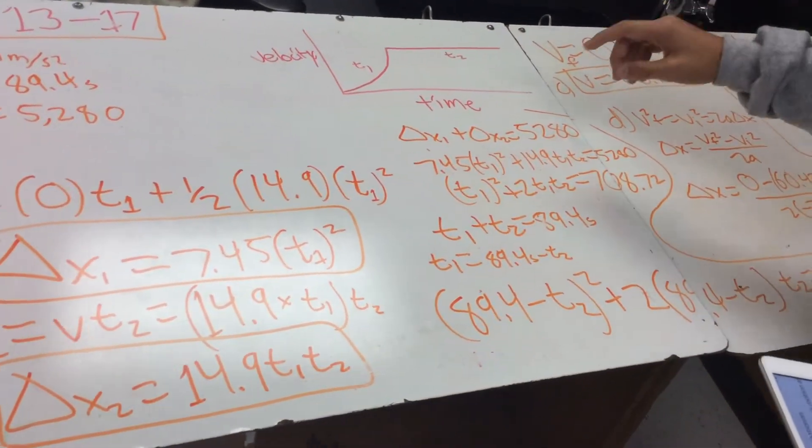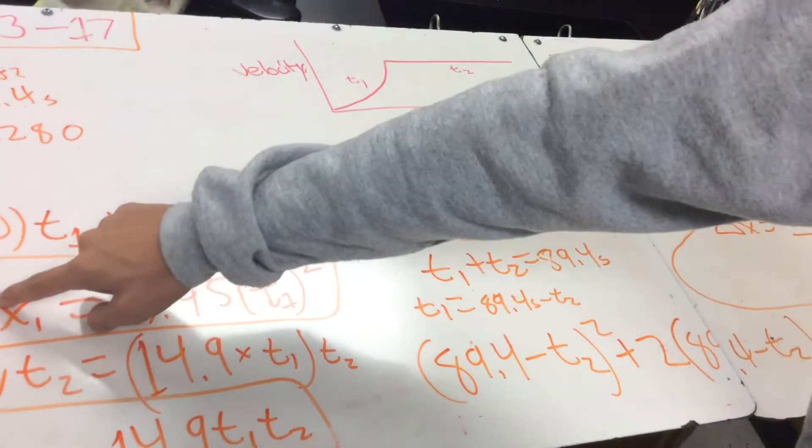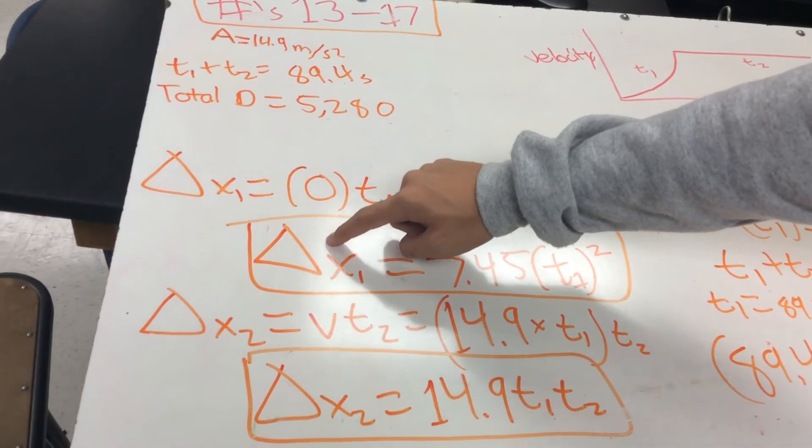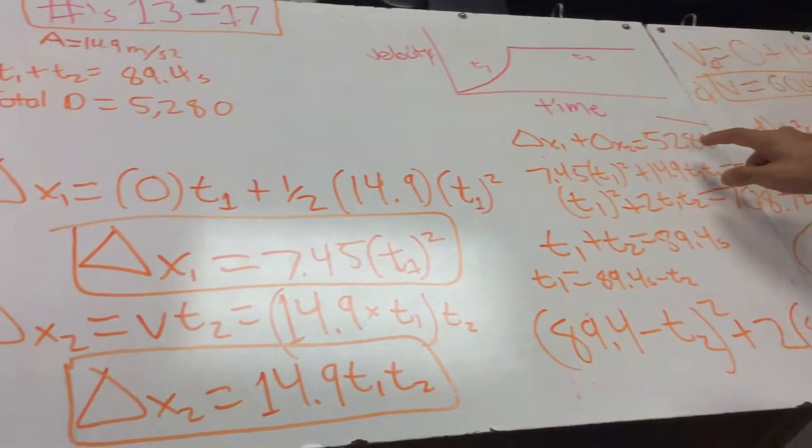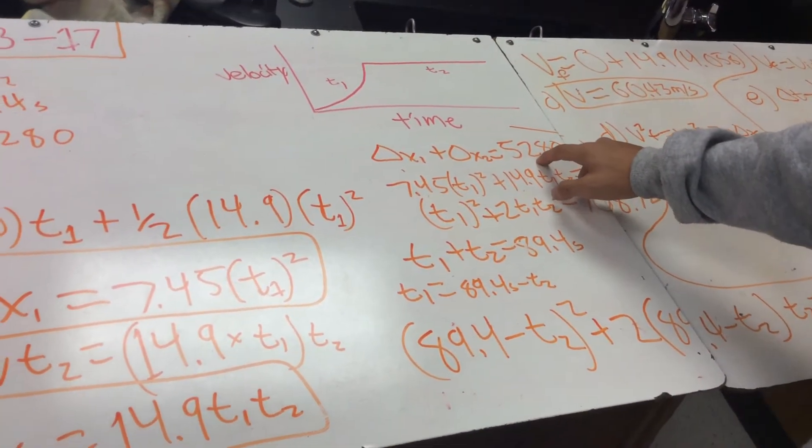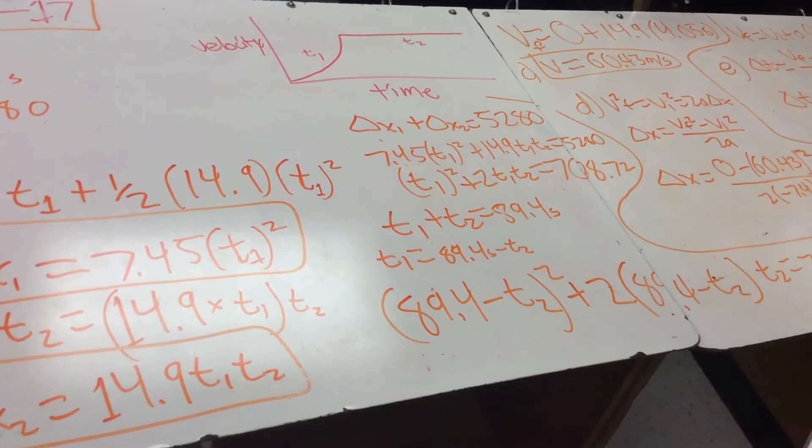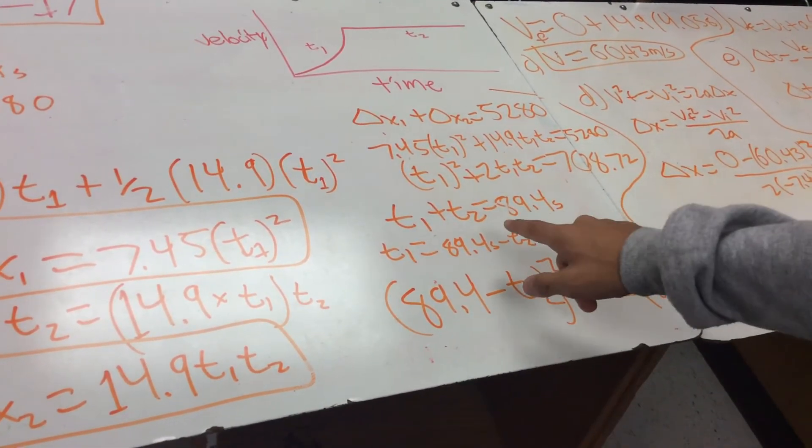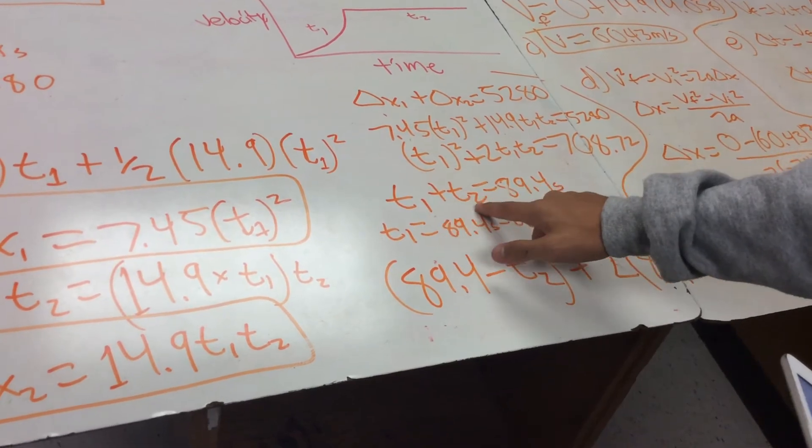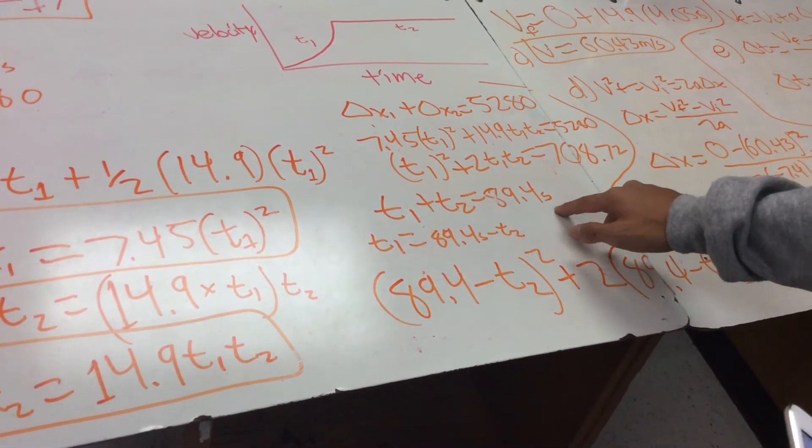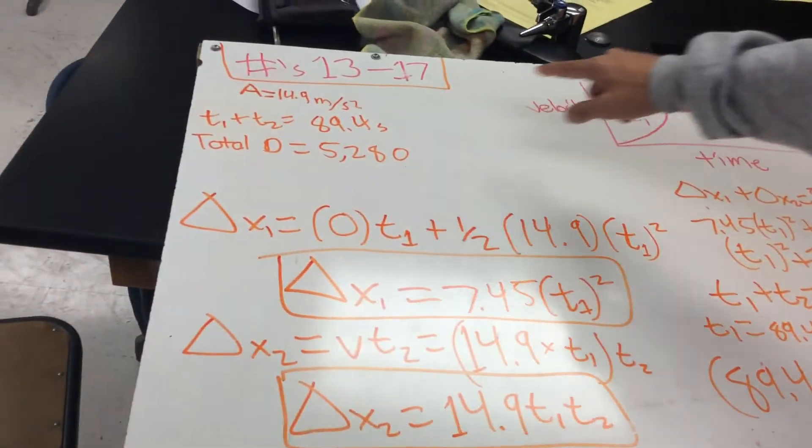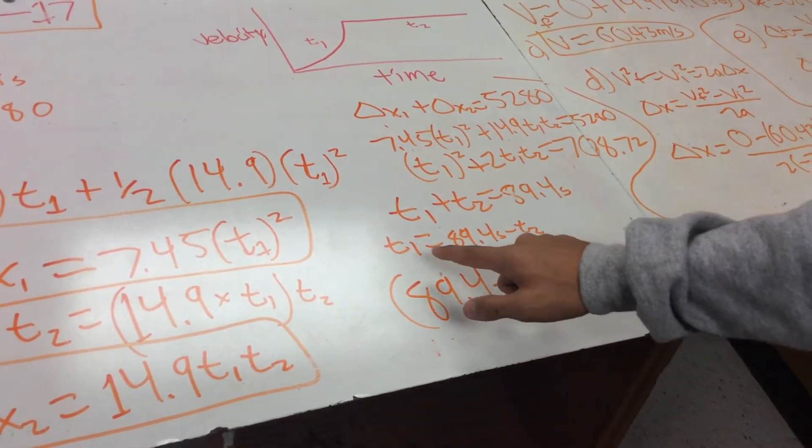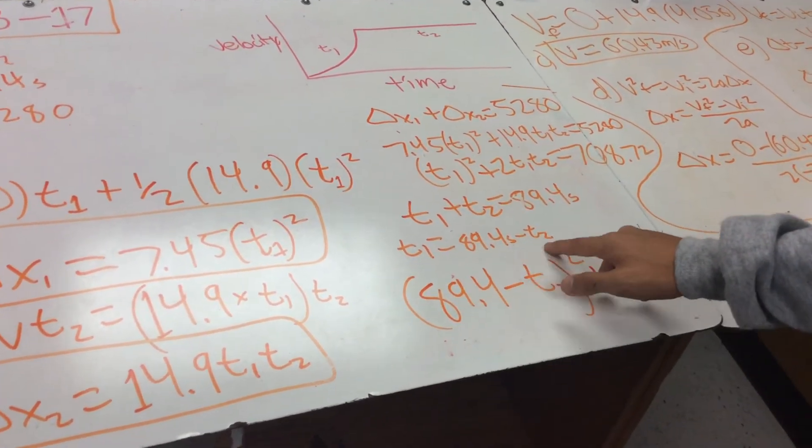So then, over here we know that this plus this equals 5,280. So it's really long, but basically, and you also know that t1 plus t2 equals 89.4 seconds, the total time. And so with substitution, you know that t1 equals 89.4 minus t2.